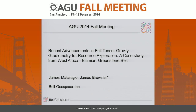Good morning. I'm James Brewster. I work for Bell Geospace. The topic of this talk this morning is about gold exploration using full-tensor gravity gradiometry in West Africa, which we feel is a case study that really gives a good example of how this technology can be used for prospect-level exploration.